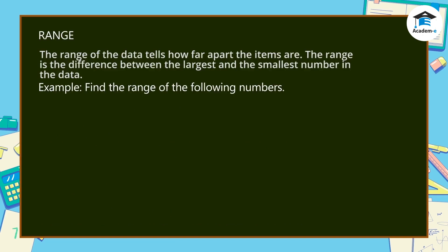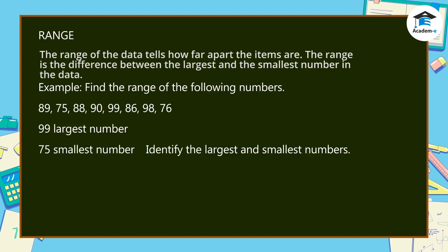Range: the range of the data tells how far apart the items are. The range is the difference between the largest and the smallest number in the data. Example: find the range of the numbers — 89, 75, 88, 90, 99, 86, 98, and 76. Identify the largest and smallest numbers.